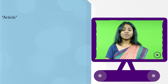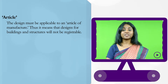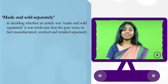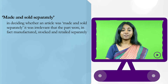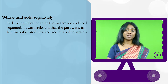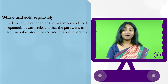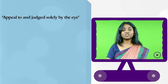Some important terms of this definition need to be understood. First, the term article: the design must be applicable to an article of manufacture, meaning designs for buildings and structures will not be registrable. Secondly, made and sold separately: in deciding whether an article was made and sold separately, it is irrelevant that the parts were in fact manufactured, stocked and retailed separately. What is important is that since the visual effect needs to be applied to an article, this application must be done in a way which can be removed from the article and is not intrinsic to add functional value to such an article. Therefore, design protects only the ornamentation or the visual effect.